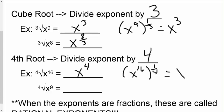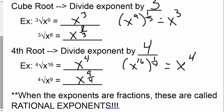x to the 4th. If I have the 4th root of x to the 9th, that's just going to be x to the 9/4. When the exponents are fractions, they are called rational exponents. So that's why we're going to keep them in that way.